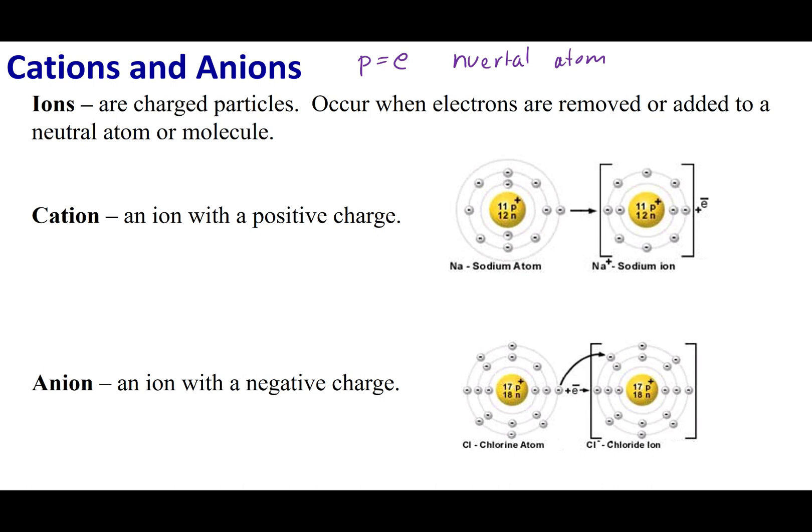It is far easier to change the number of electrons. If I change the number of electrons, what I'm doing is I'm keeping the atom the same, because remember, the proton defines the atom.